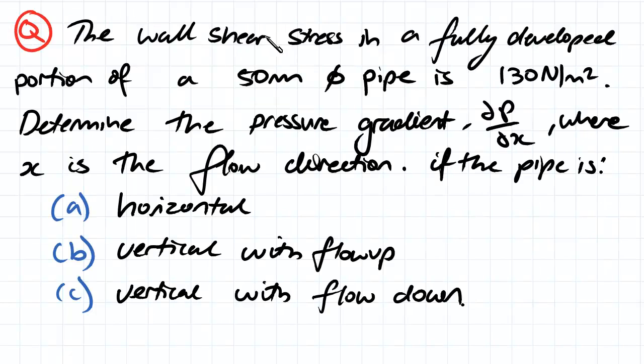The wall shear stress in a fully developed portion of a 50 millimeter diameter pipe is 130 newtons per meter squared.